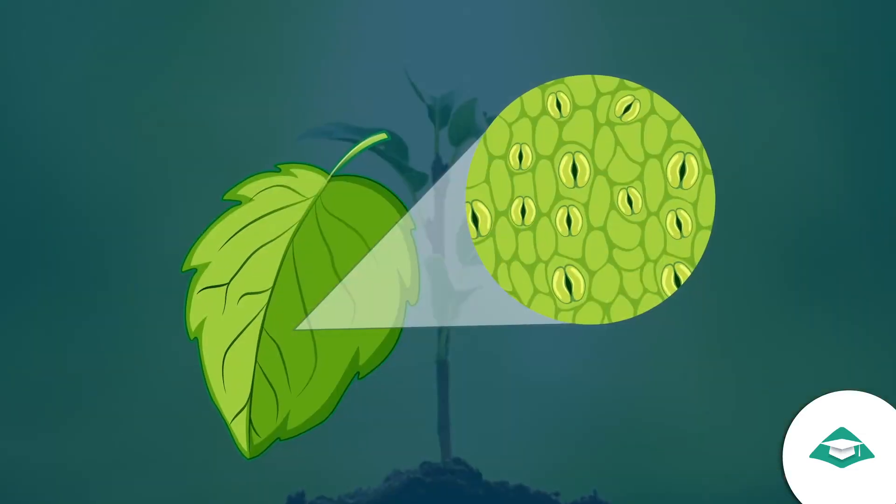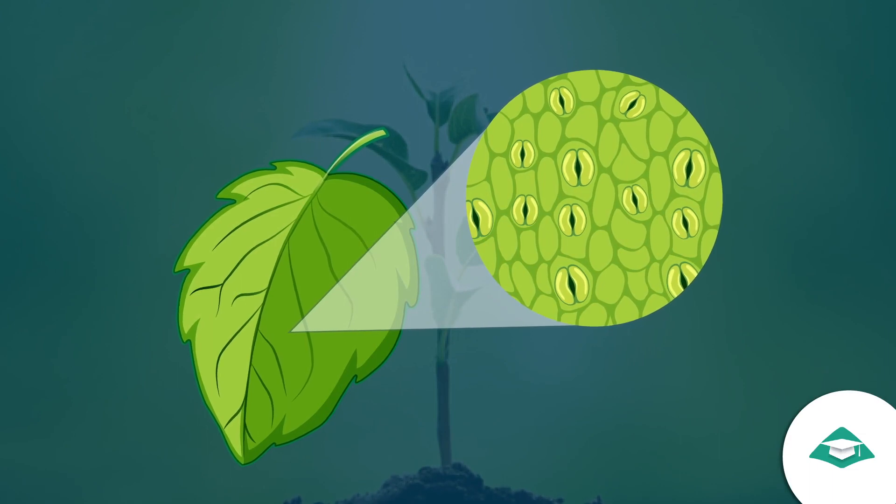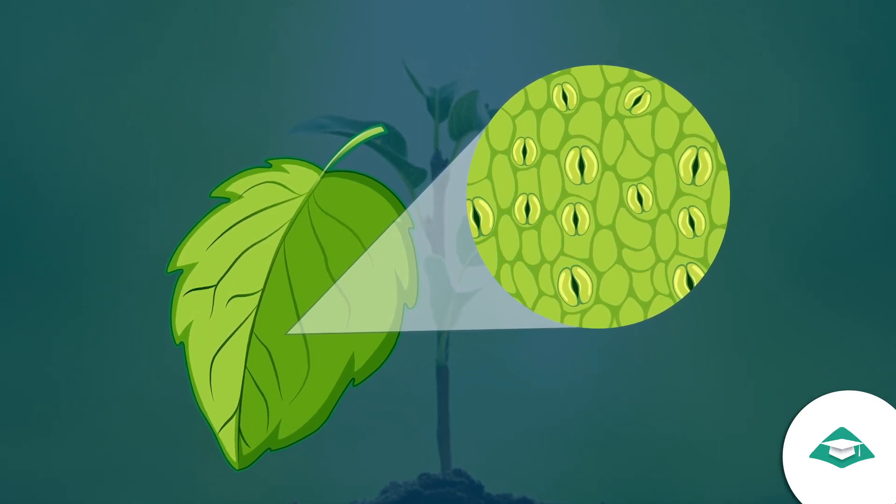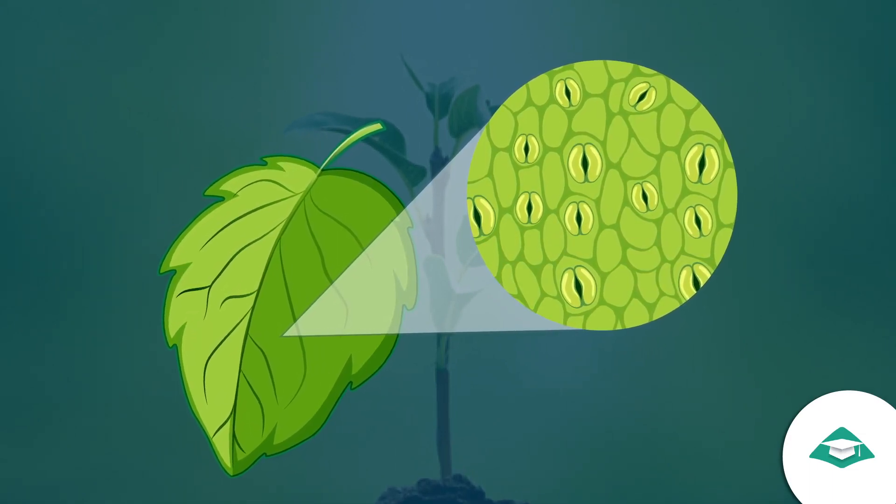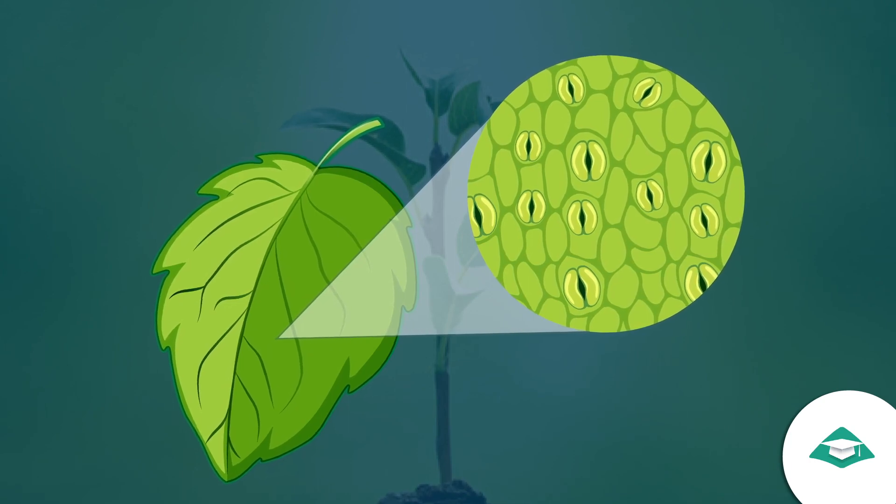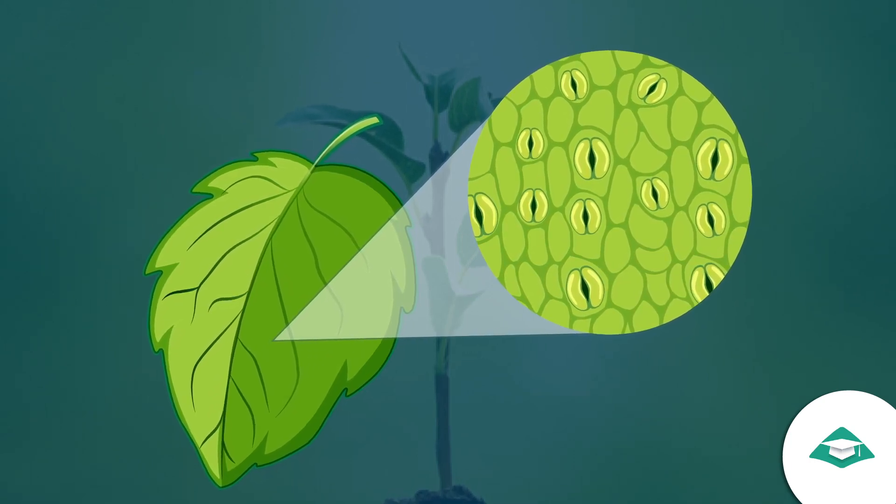Leaves of a plant have tiny pores called stomata. Carbon dioxide from air enters into leaves through these tiny stomata.